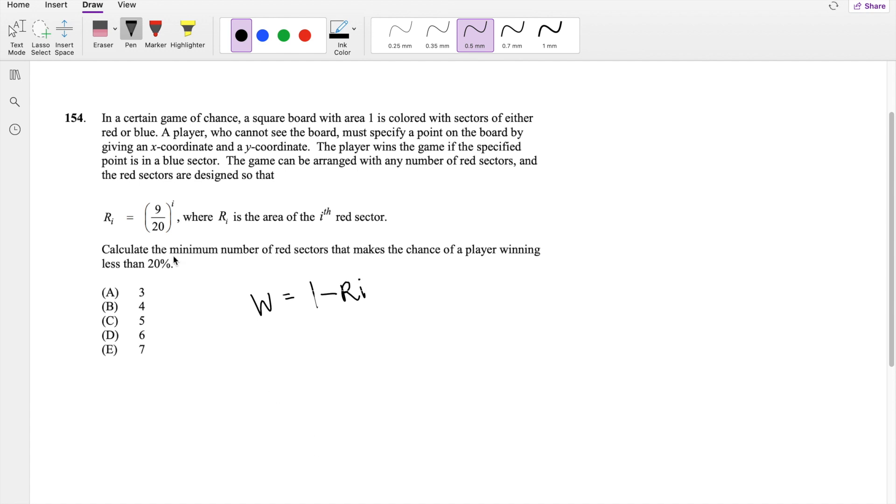You can only win when you get not red. For this one, let's say R equals I equals 0. You can't have 0 red sectors, so I has to start at 1.